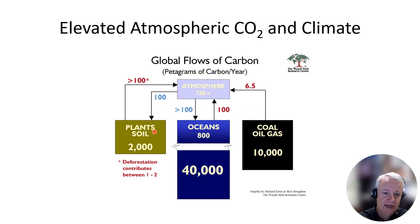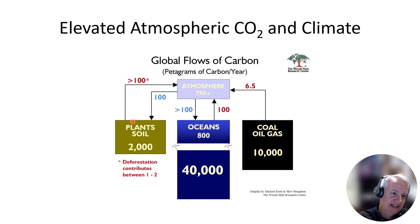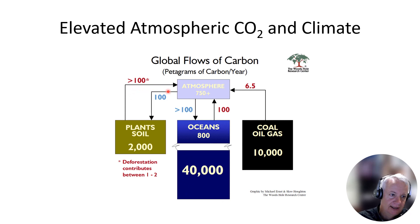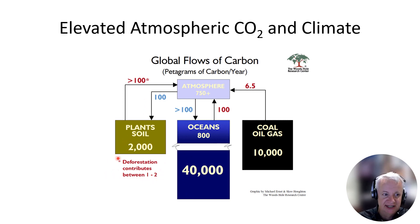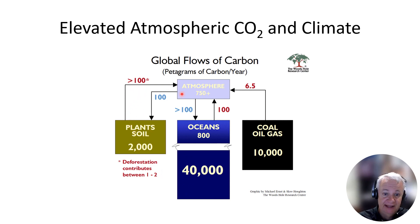A couple of things to note here. First, the interaction between the atmosphere and oceans and the interaction between the atmosphere and plants and soils are almost in balance. There's a little bit more carbon being put into the atmosphere from plants and soil than is being taken up by photosynthesis — released due to respiration, but also deforestation. Because we're clearing some land and not putting it back in forest, that makes this number a little bit bigger.